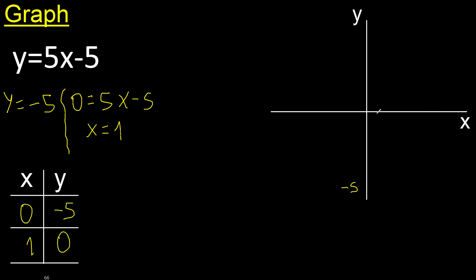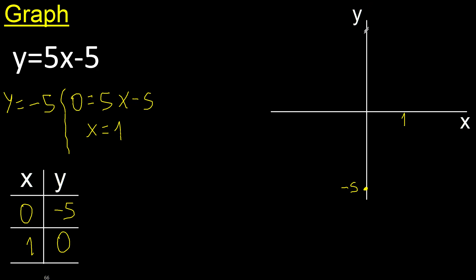x: 0 is here, 0 minus 5, therefore the point is here. x is 1, negative, positive, 1 is here. y is 0, 0 is here — 0, 1 — therefore the point is here.